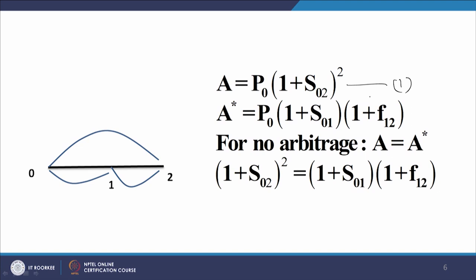In the rollover case, the principle of no arbitrage will not necessarily hold, and there would not necessarily be a relationship between S02 and the rates obtained in the rollover approach. However, if I modify the condition — settling the rate at t equal to 0 for the deposit from t equal to 1 to t equal to 2 years — I am no longer exposing myself to the fluctuation in rates. I fix the rate at t equal to 0, just like fixing the forward price of a commodity.